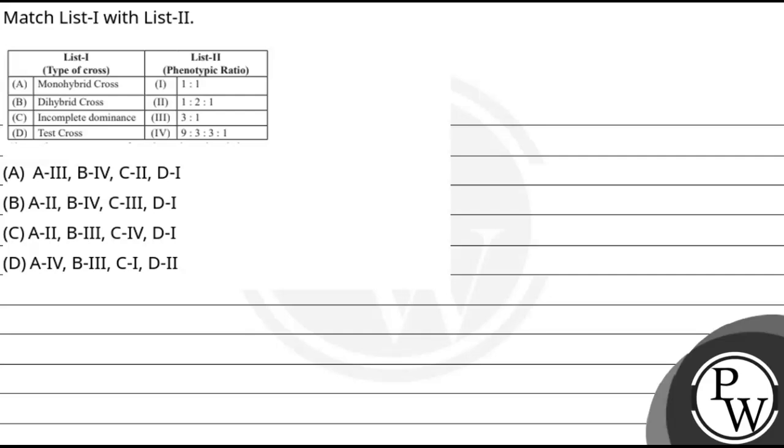Hello guys, let's read your question. In this question, we have to match list 1 and list 2. In list 1, we have given types of cross and in list 2, we have given phenotypic ratio. According to this, we have to find the correct option.